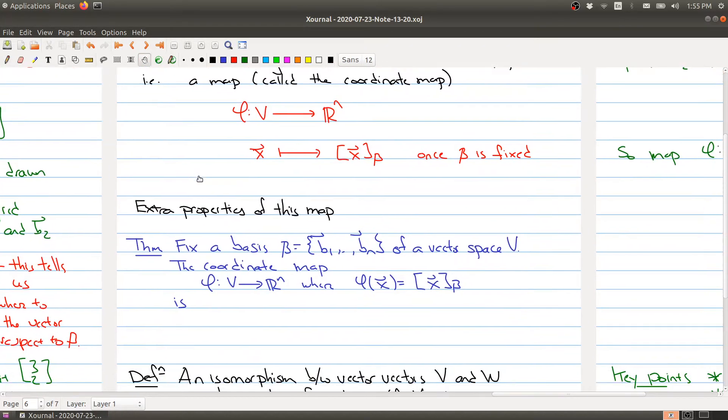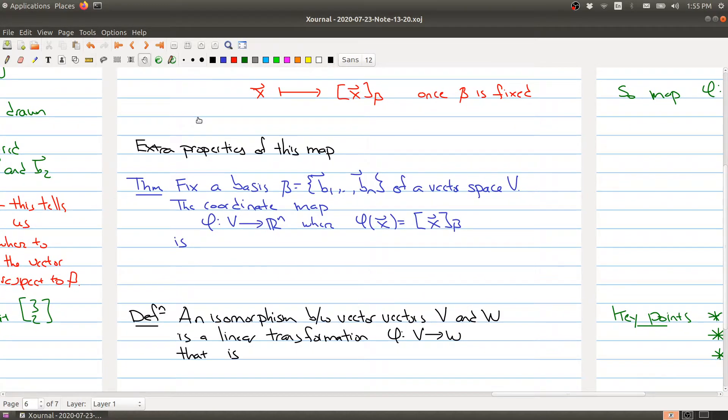Now it turns out this is actually a very nice map or function. It actually has more properties that are quite useful. So namely, once you fix a basis of your vector space V, then the coordinate map, which we just described above, which takes a vector x and sends it to the b coordinate, has the following three properties.